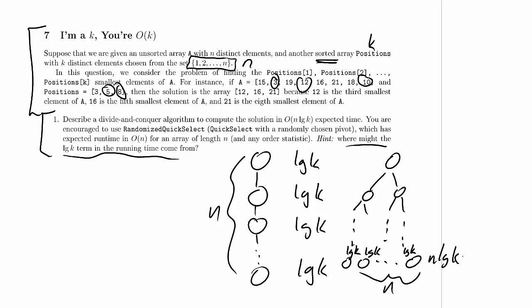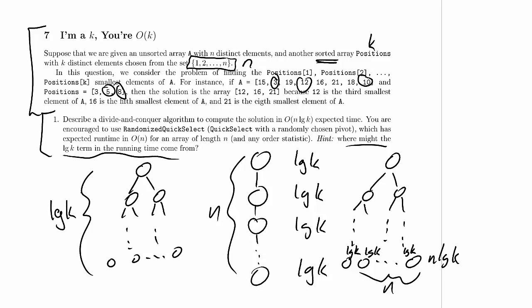The most natural place for a log term to come from in a divide-and-conquer is the depth of the tree. If the tree has depth log k and balanced work of n at each level, we get n log k total work. The binary search idea also seems promising, so we keep both options in mind.